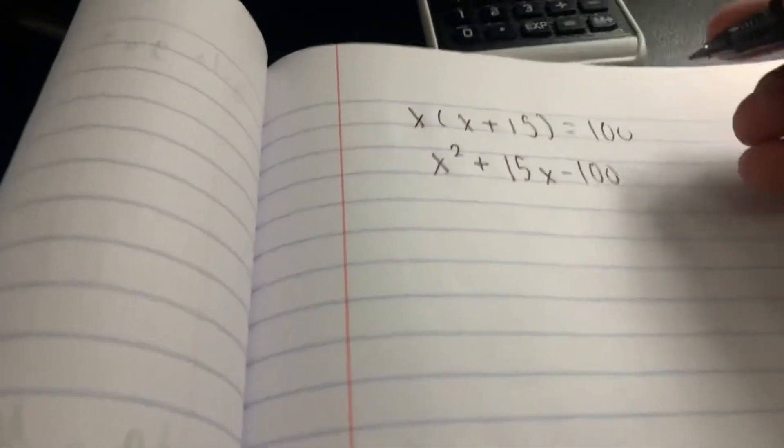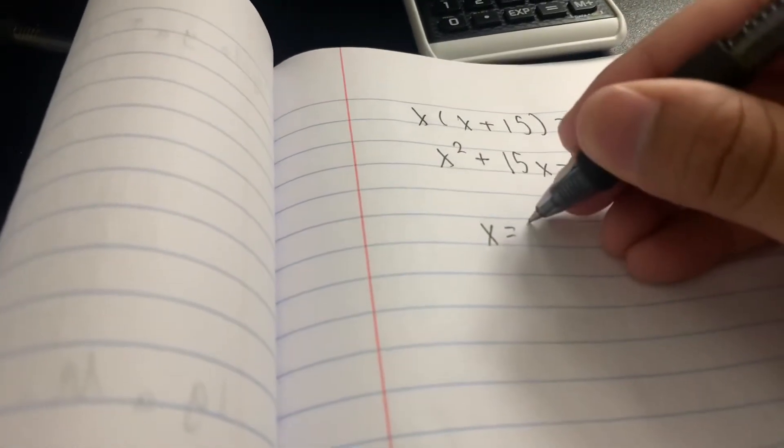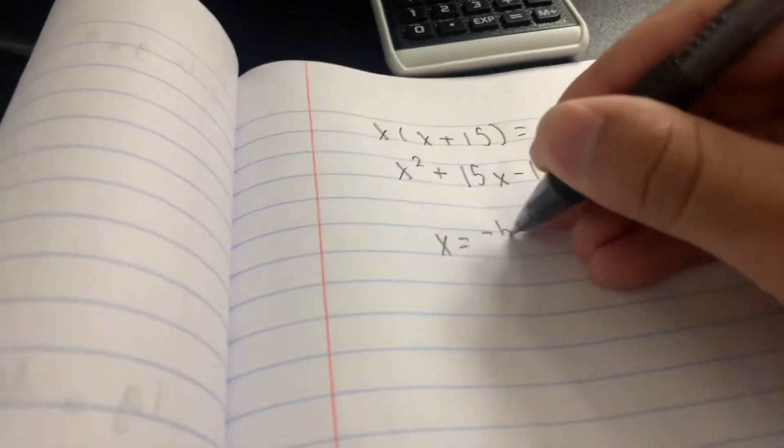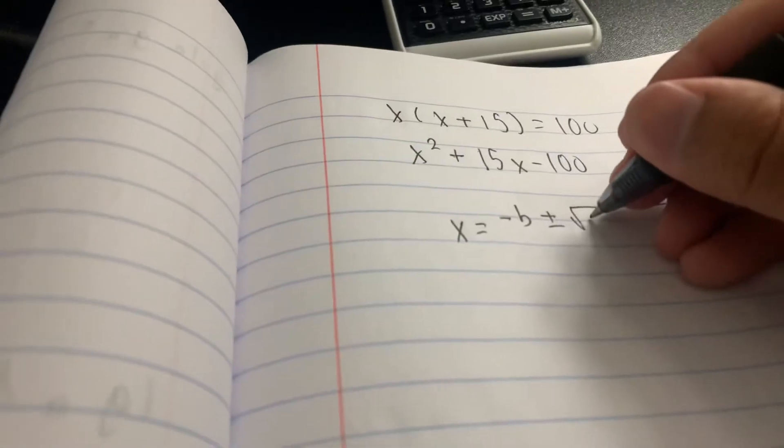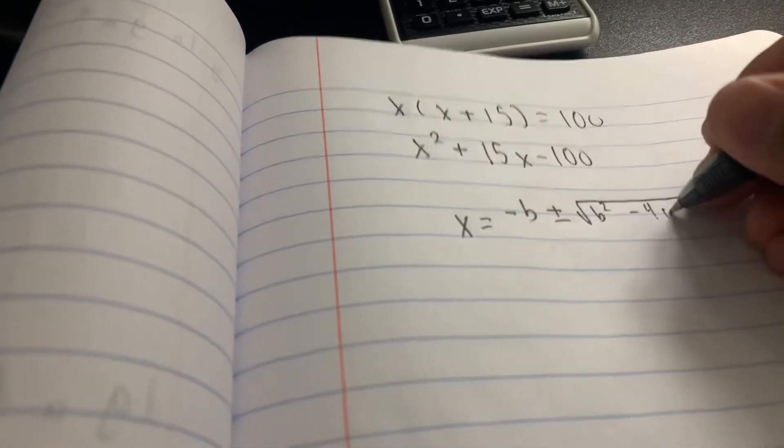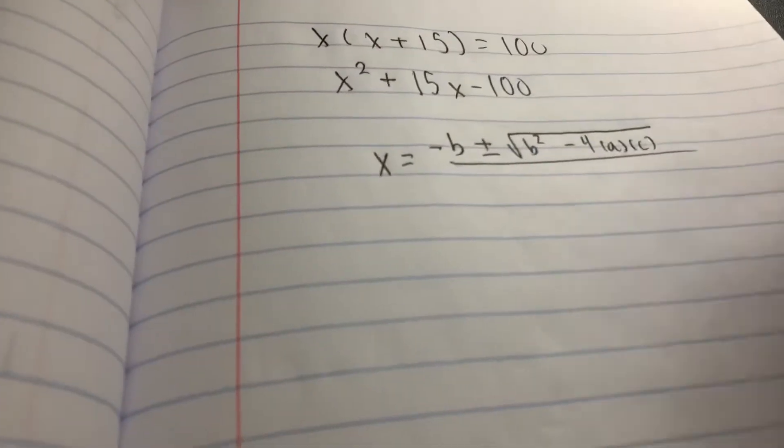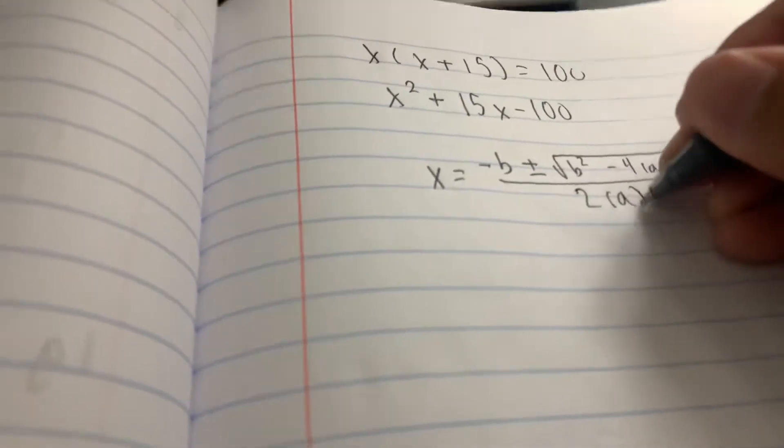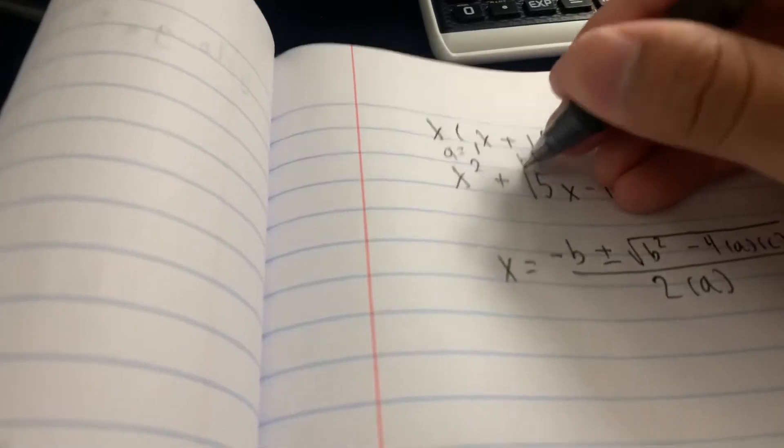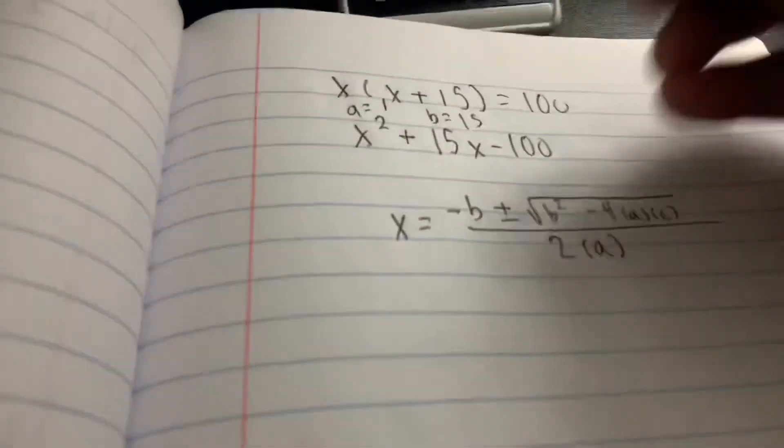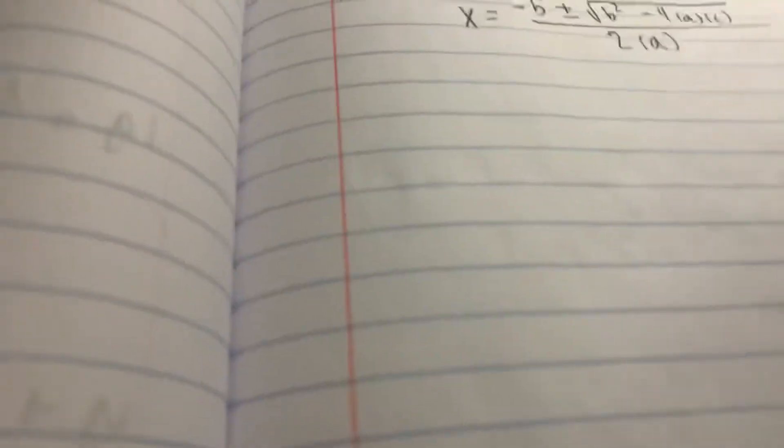Just skip that part. Go straight to it. Now, you can put this in the quadratic formula, which is X equals negative B plus or minus B squared minus 4AC divided by 2A. And then this is A, so it would be 1. This is B, so it would be 15. And this is C, so it would be negative 100. So let's go ahead and plug that in.